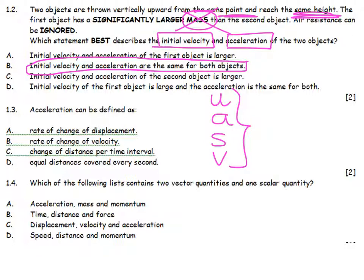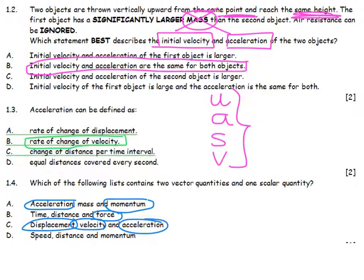Acceleration, this is pure book work, is defined as the rate of change of velocity. Which of the following lists contains two vector quantities and one scalar? We're back to level 1 stuff where acceleration is a vector, momentum is a vector, mass is a scalar, time is a scalar, distance is a scalar, force is a vector, displacement is a vector, velocity is a vector, acceleration is a vector, and momentum is a vector. So the only one with two vectors and one scalar is going to be A.